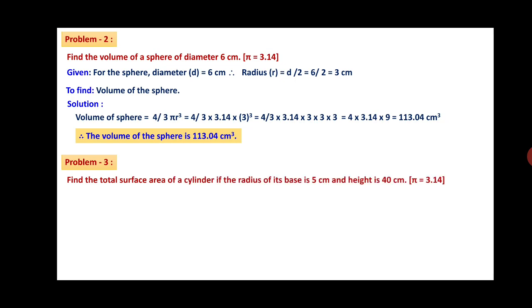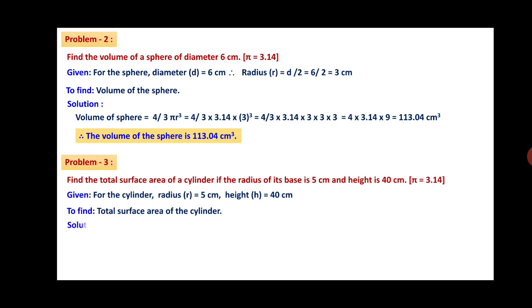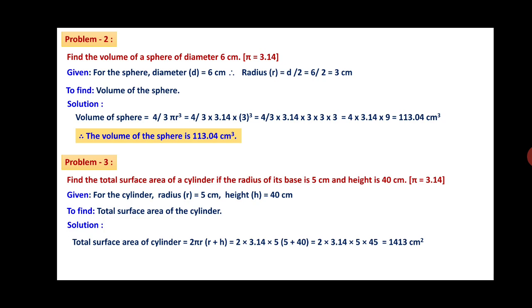Problem 3: Find the total surface area of a cylinder if radius of its base is 5 cm and height is 40 cm, with π = 3.14. Given: R = 5 cm, H = 40 cm. Total surface area = 2πR(R + H) = 2 × 3.14 × 5 × (5 + 40) = 2 × 3.14 × 5 × 45 = 1413 cm². Therefore the total surface area of the cylinder is 1413 cm².